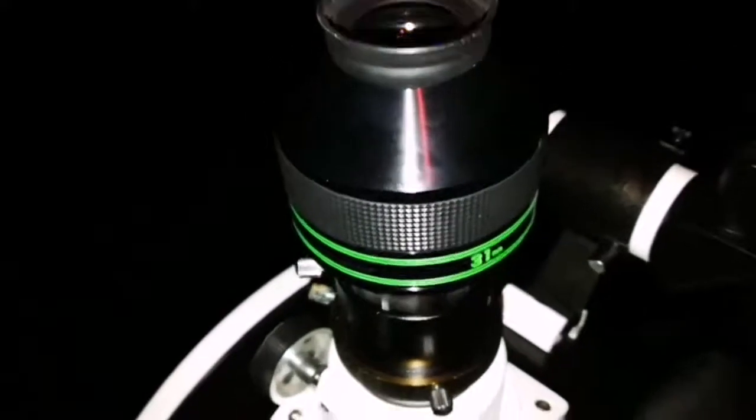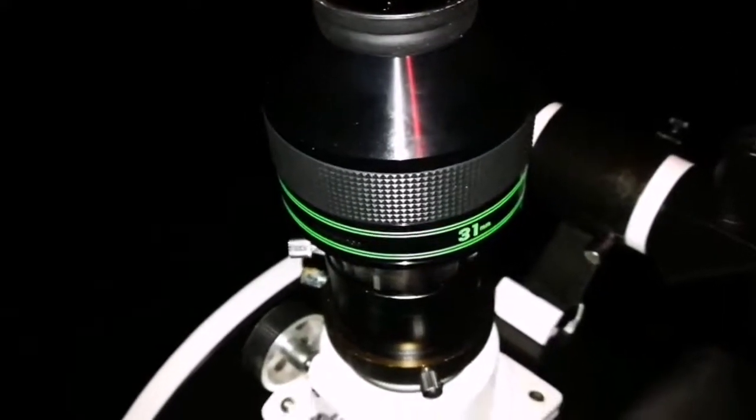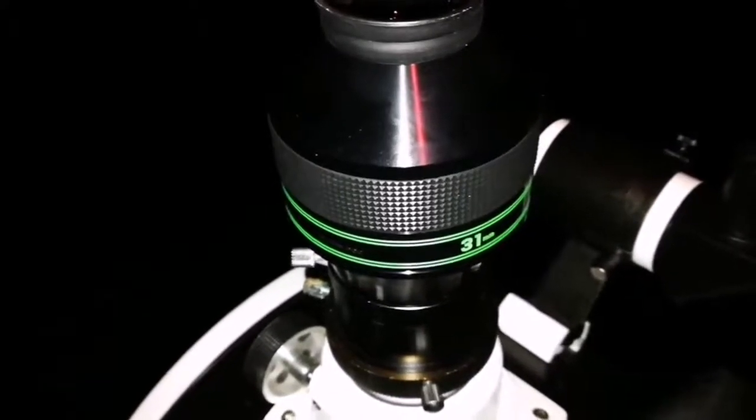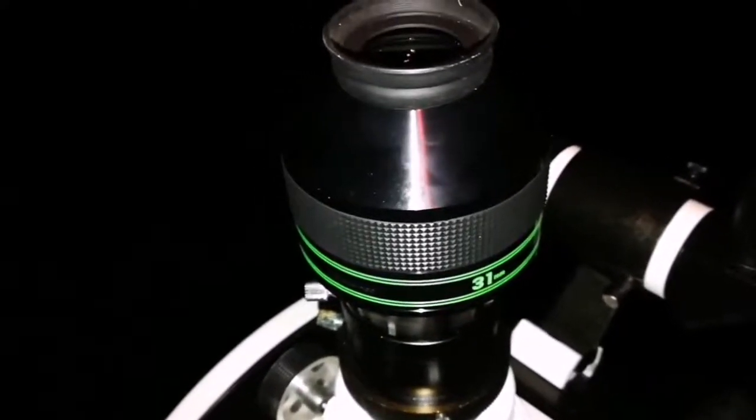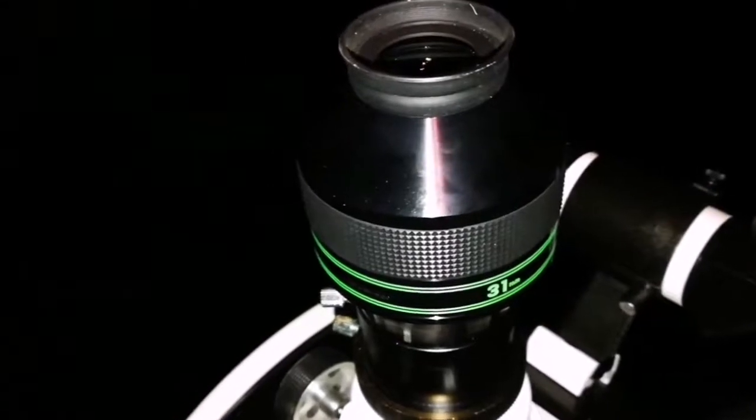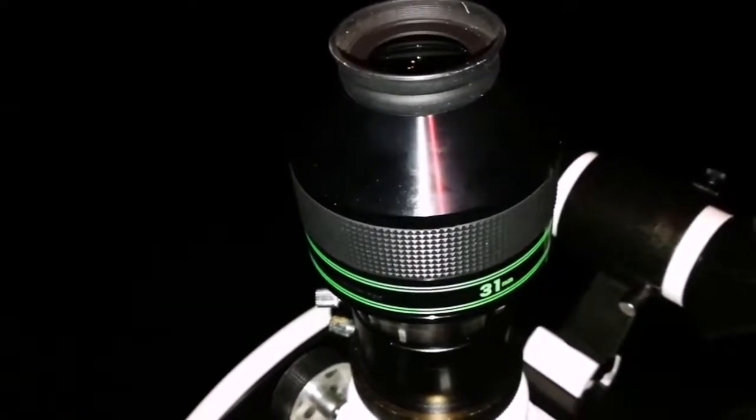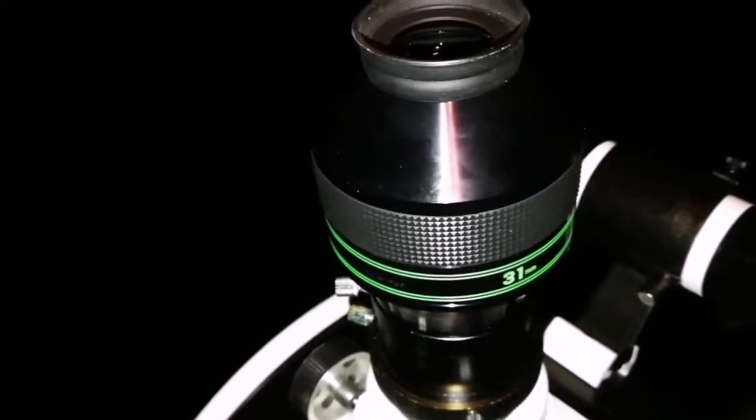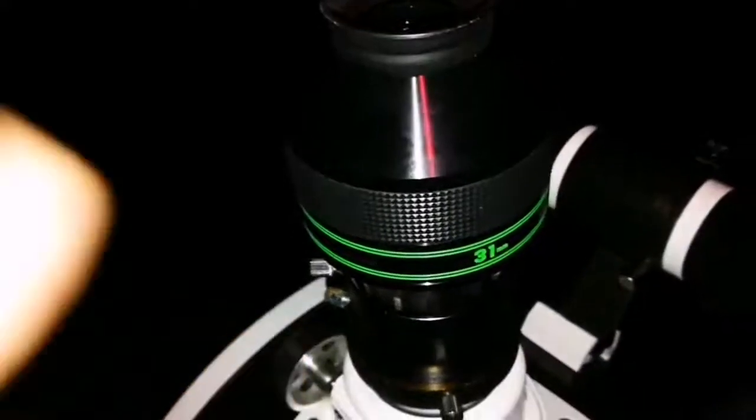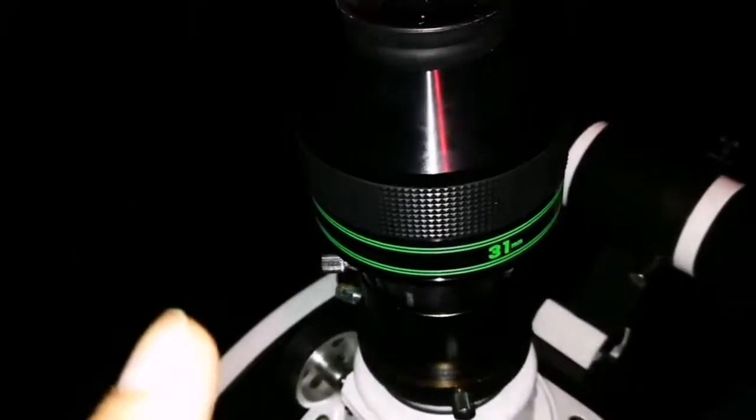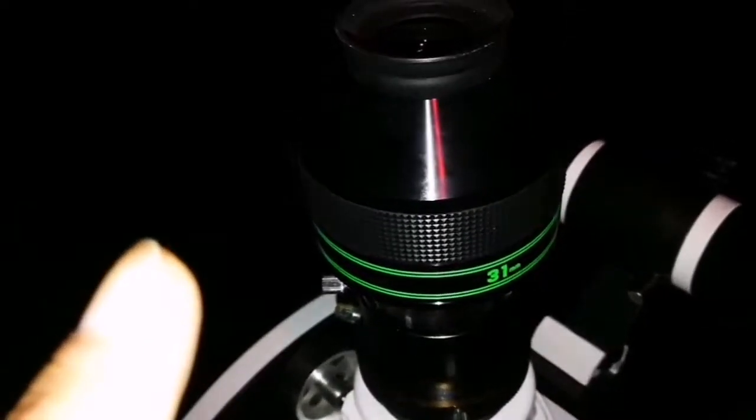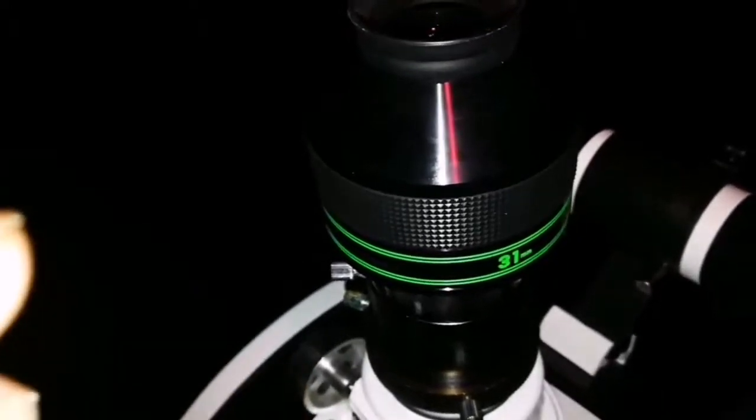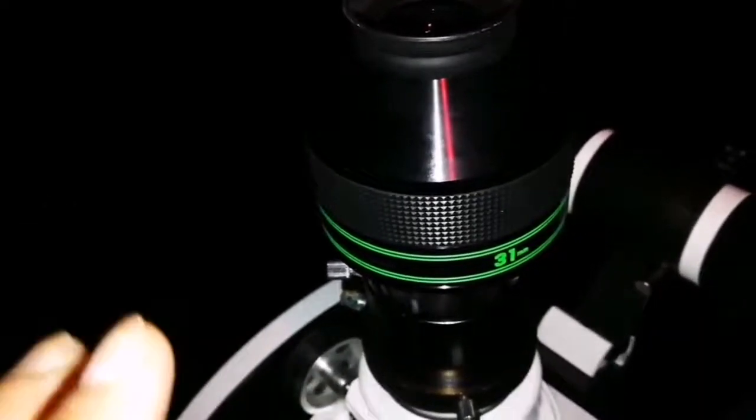I think of these three eyepieces that I used - the Super Plossl Meade 56 millimeter, Max Vision 40 millimeter 68 degrees, and Nagler 31 Type 5 - I think I prefer the Nagler one. Main reason I think is because it gives the highest magnification, which means that the sky background will be darker.